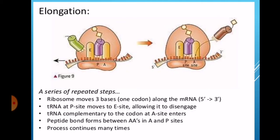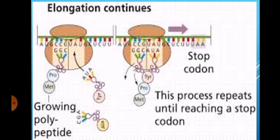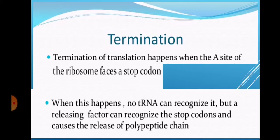The second phase or stage is elongation. Ribosome moves three bases along the messenger RNA, five prime to three prime. tRNA at P site moves to E site allowing it to disengage. tRNA complementary to the codon at A site enters, peptide bonds form between amino acids in A and P sites. Process continues many times. Elongation continues. Termination phase: termination of translation happens when the A site of the ribosome faces a stop codon. When this happens, no tRNA can recognize it, but a releasing factor can recognize the stop codon and causes the release of the polypeptide chain.